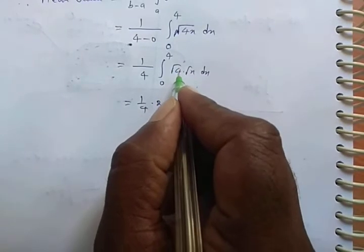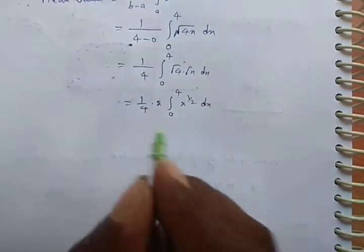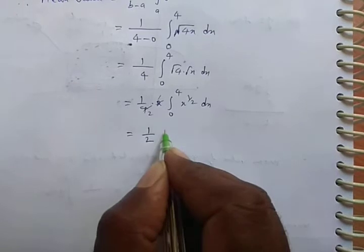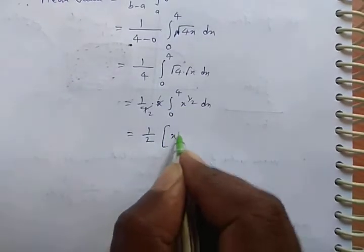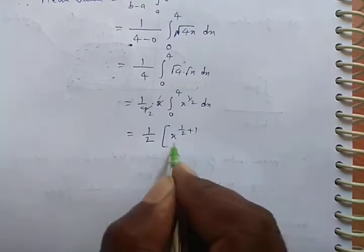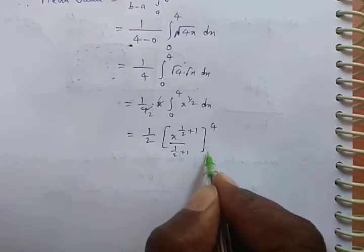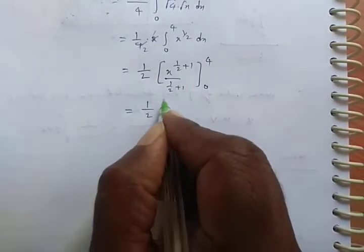√x can be written as x^(1/2) dx. So √4 means 2, this 2 I am writing outside. Which is equal to 1/2. Now apply integration here: integration of x^n is x^(n+1)/(n+1), upper limit 4, lower limit 0.